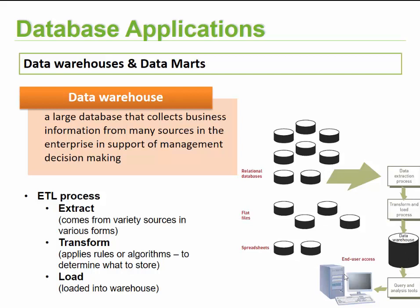This whole process is also known as ETL — Extract, Transform, and Load. Extract means taking the information from the various sources. Transform means applying various rules and algorithms to determine what data we want to save. The third step is to load it into the warehouse. Once loaded, people can go and access it, perform queries, and get a visual representation of that data.